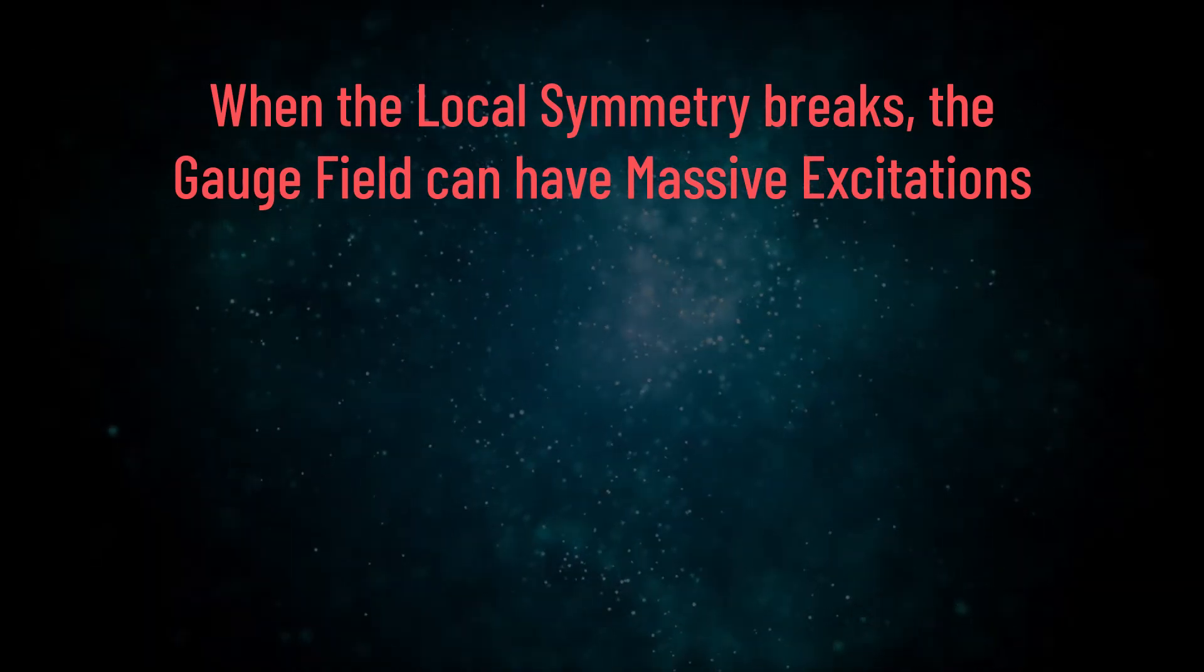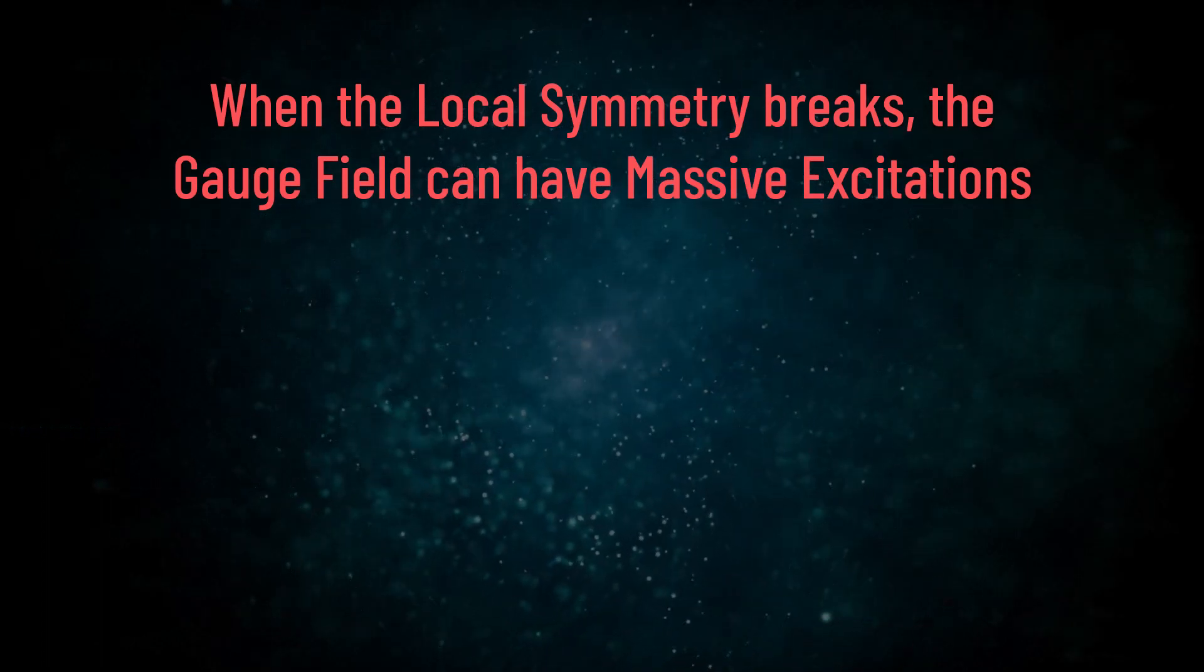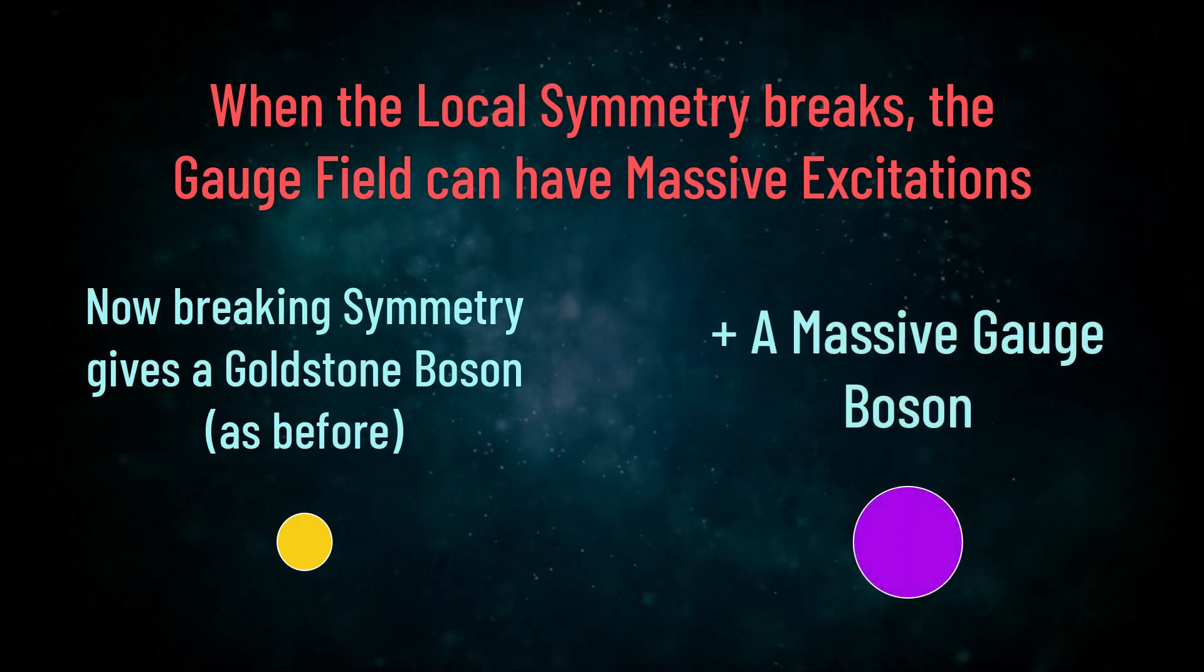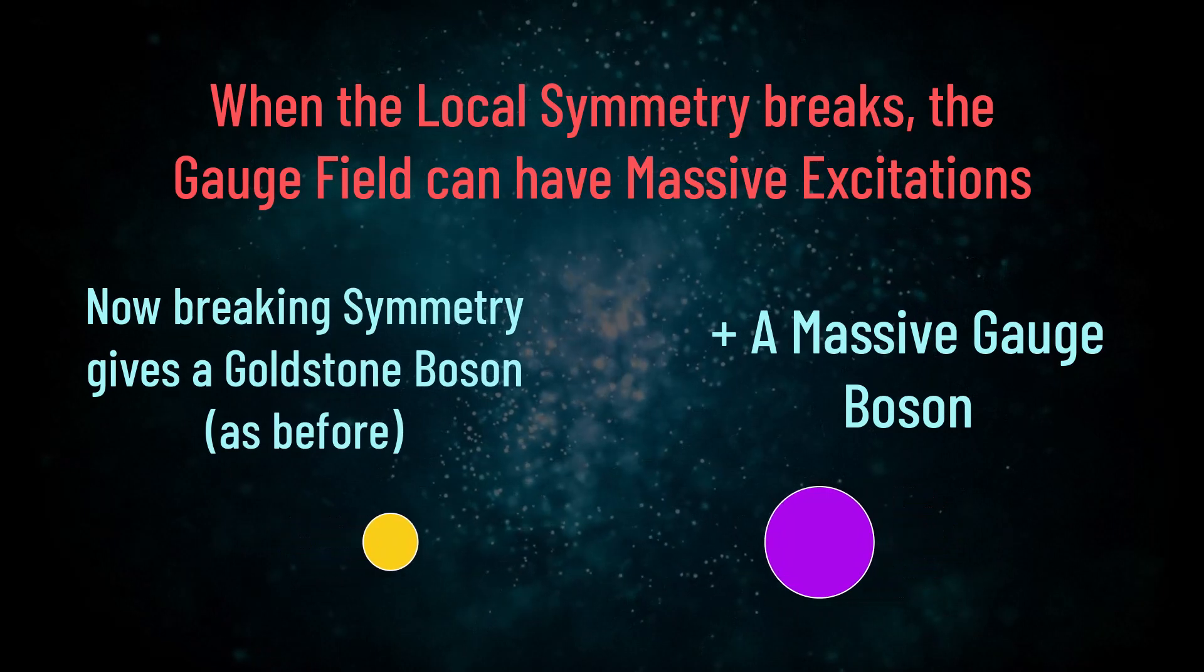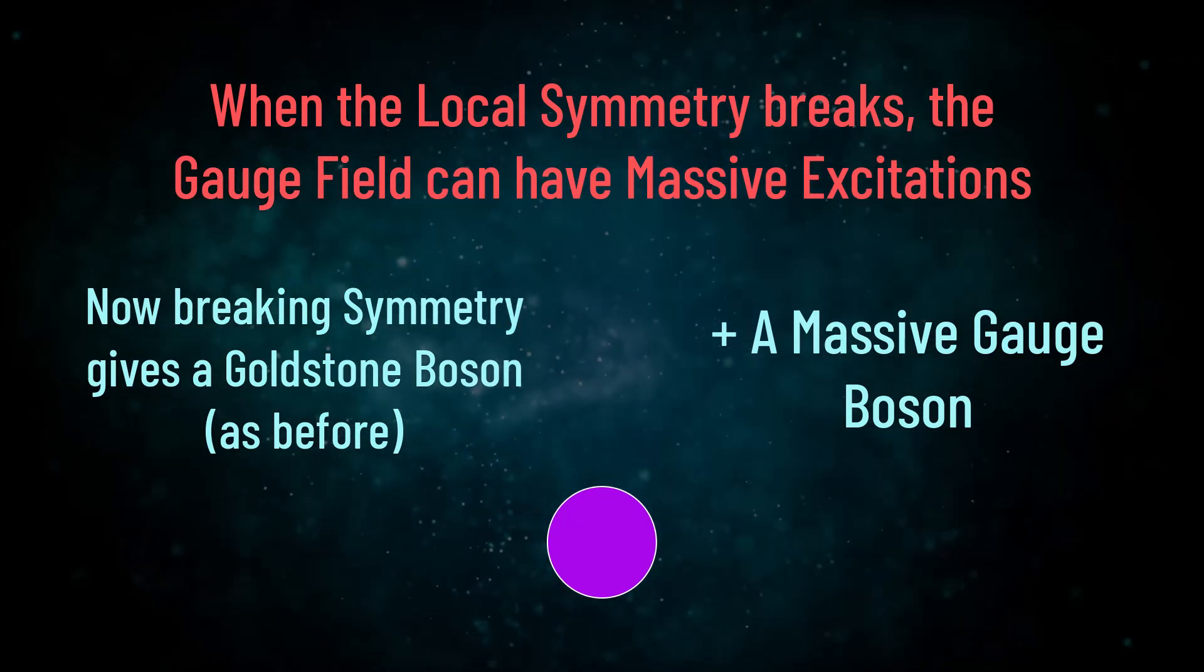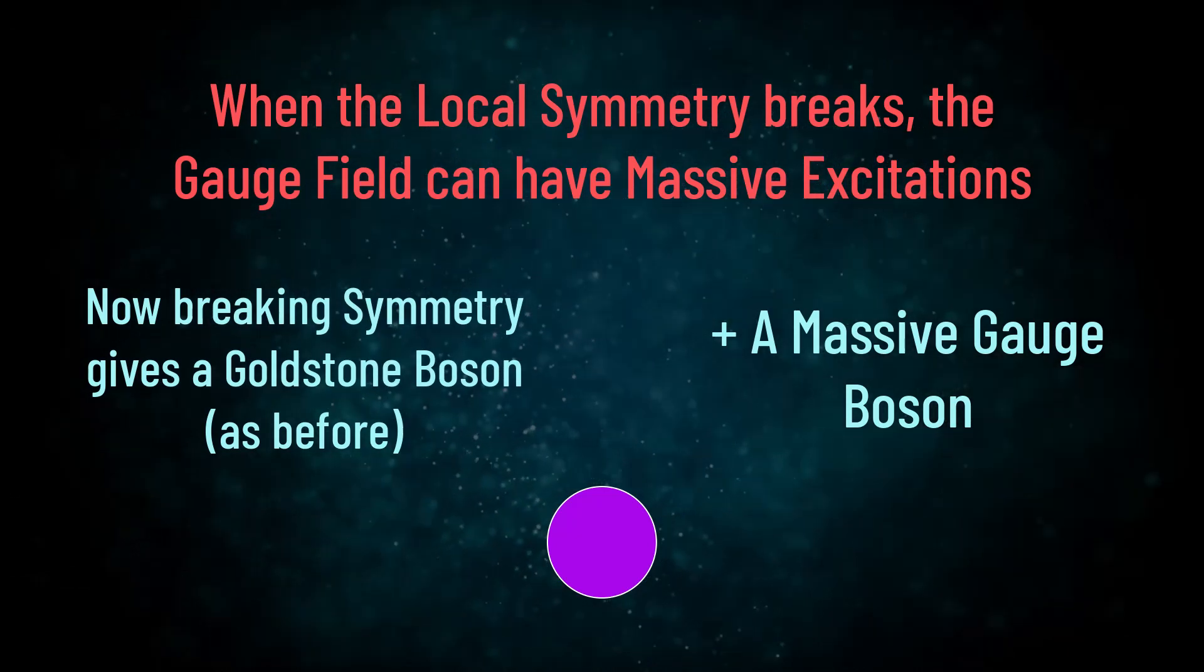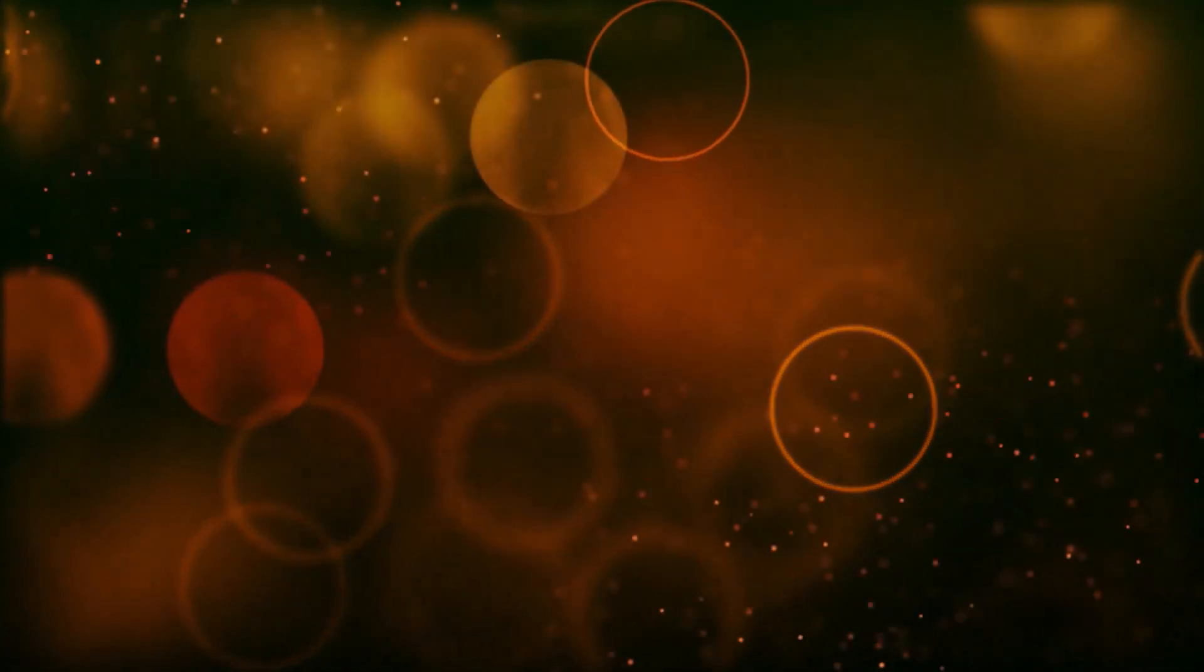So importantly for each spontaneously broken symmetry, we get a massless excitation from that field, i.e. a goldstone boson, as well as a separate gauge field becoming massive, creating a gauge boson which has mass. What then happens is the massless goldstone boson gets absorbed by the massive gauge boson and disappears. Remember though that the other broken global symmetries not associated with gauge fields still produce a goldstone boson, so we can still have massless excitations even when one gets absorbed by a gauge boson. This is a key difference between local and global symmetries and the effect of gauge fields.